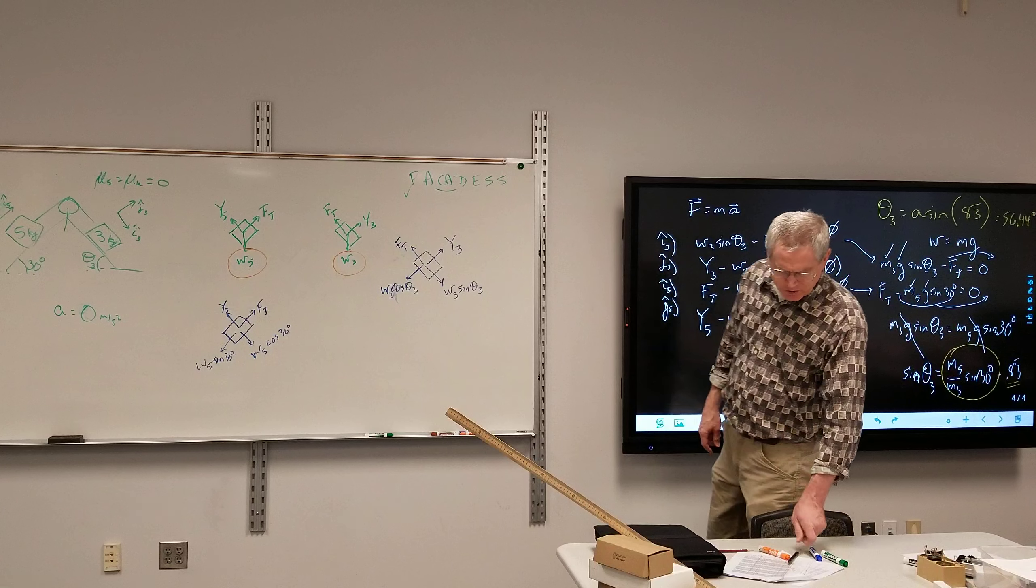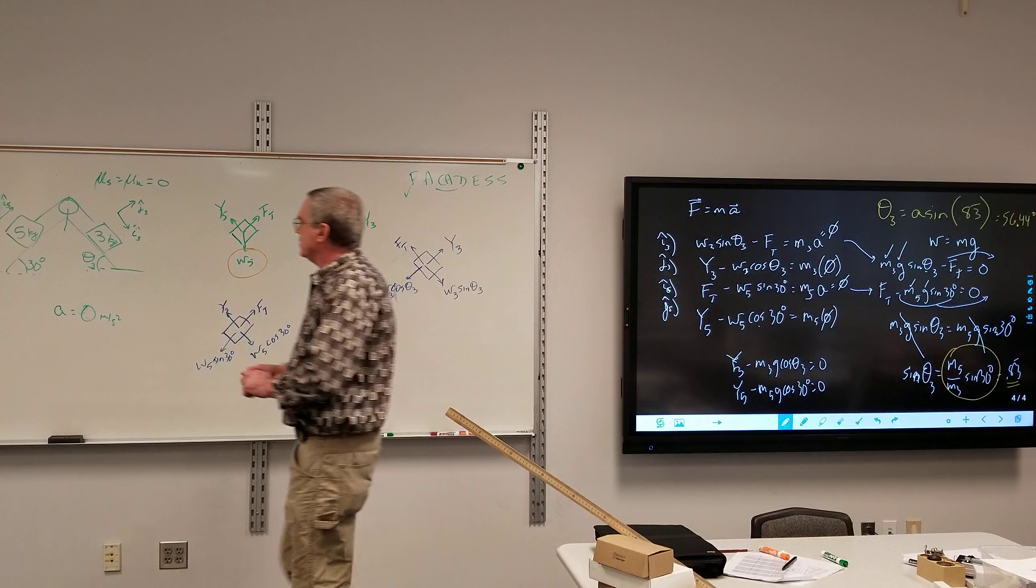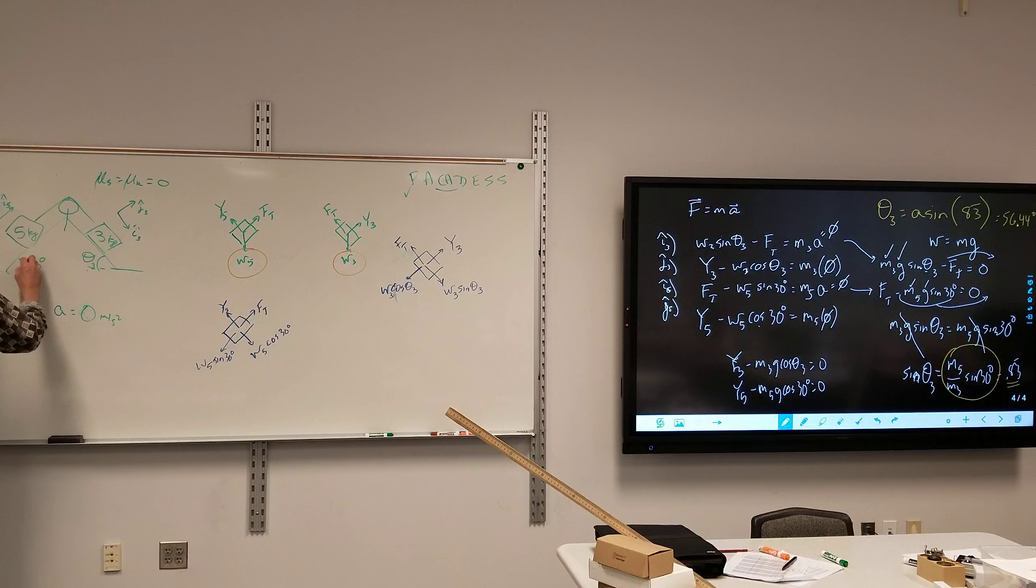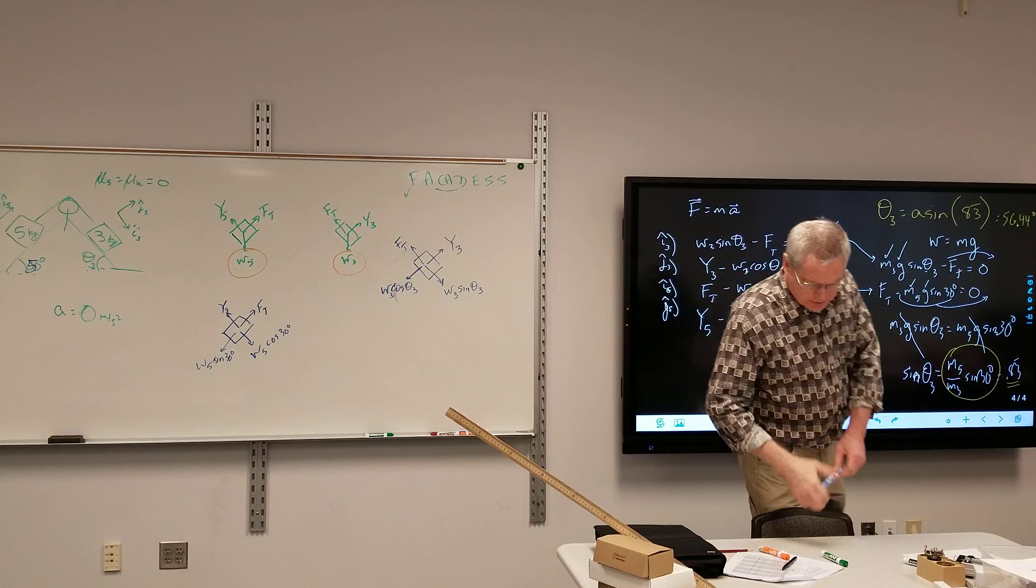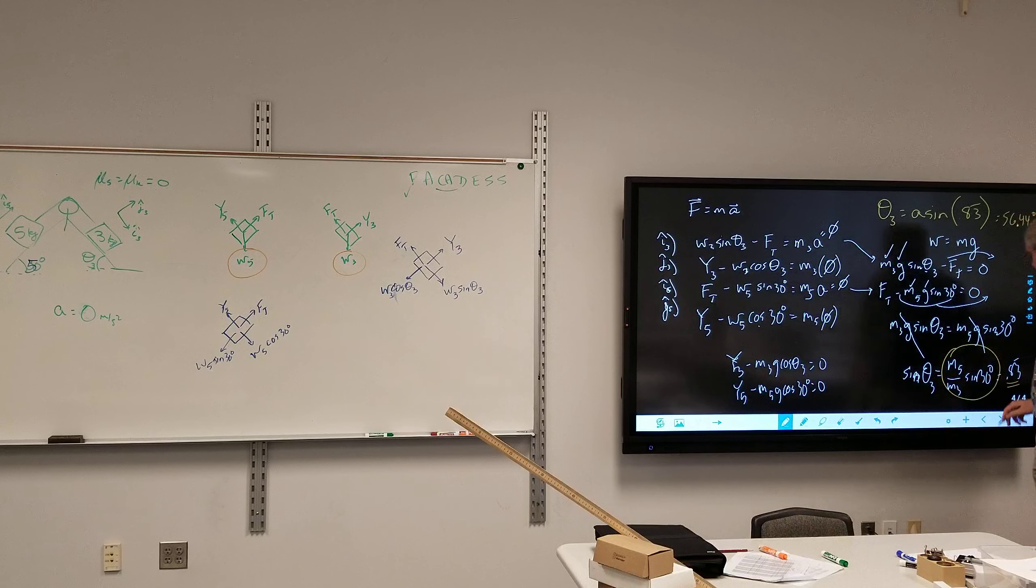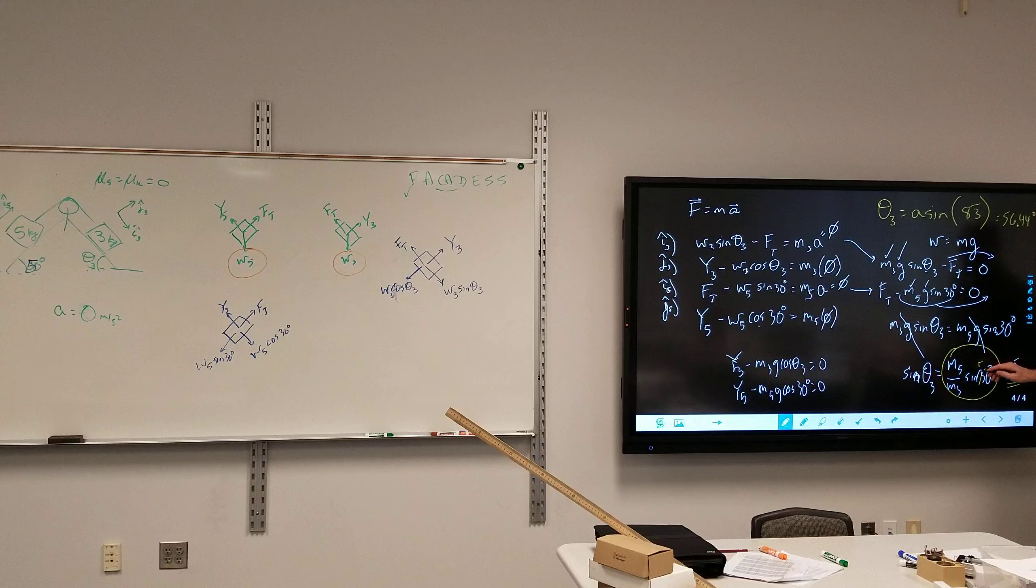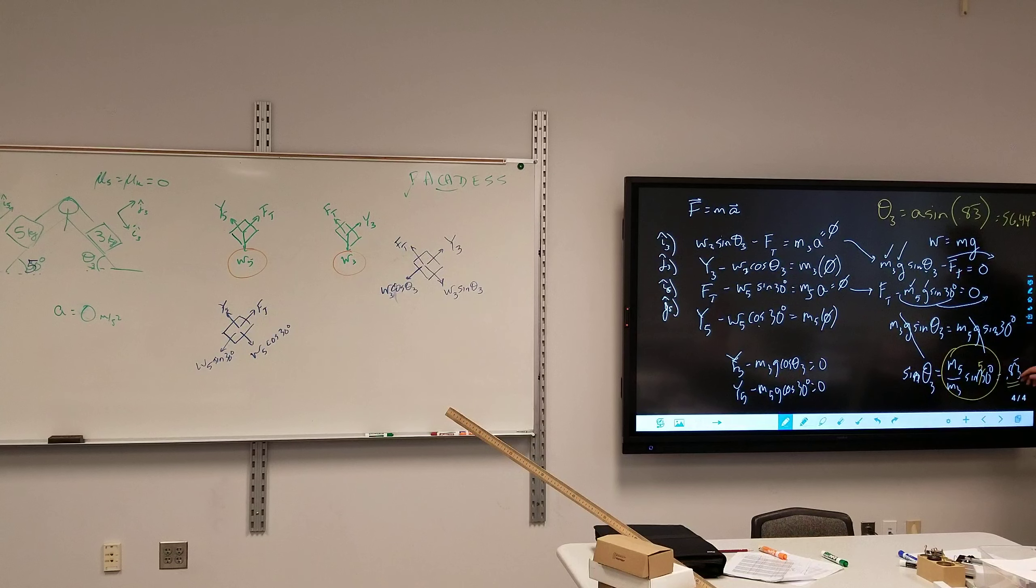If instead of being this a 30 degree angle, this had been, let's say this was a 50 degree angle. What ultimately changes over here is that becomes 50 degrees. So, what would the sine of theta 3 be equal to if this is 50 degrees?